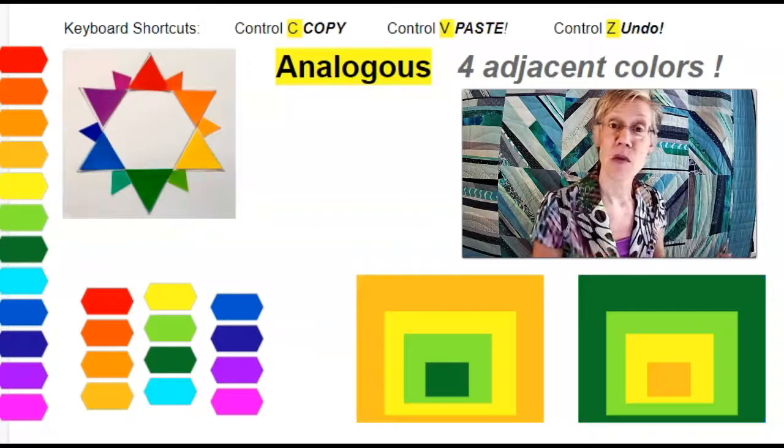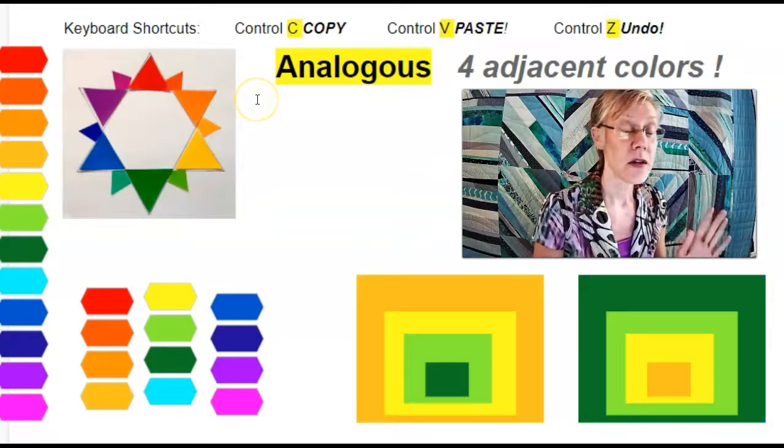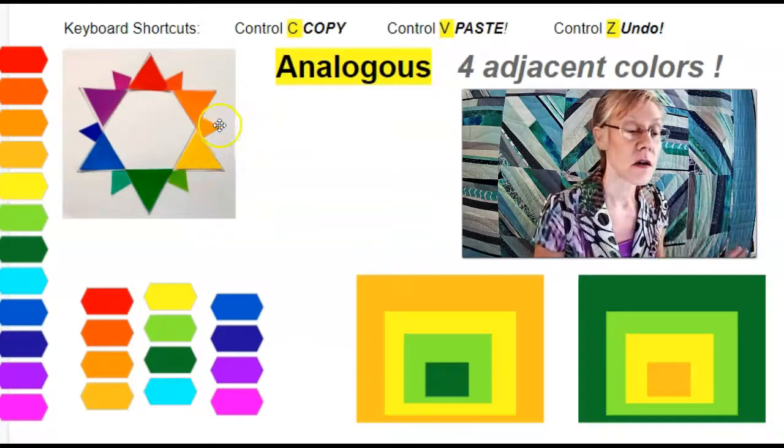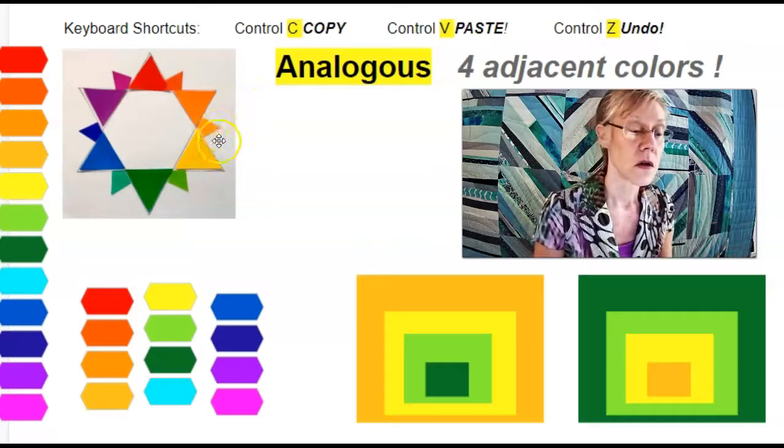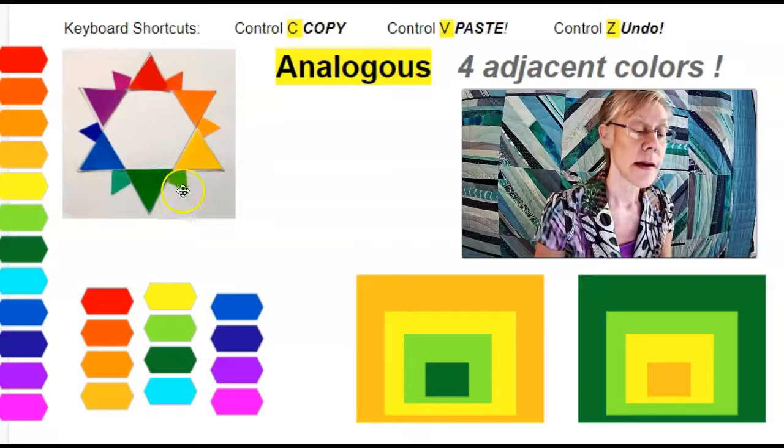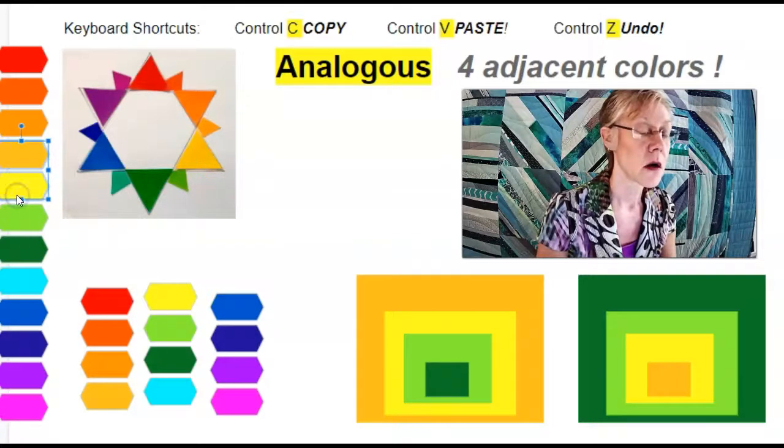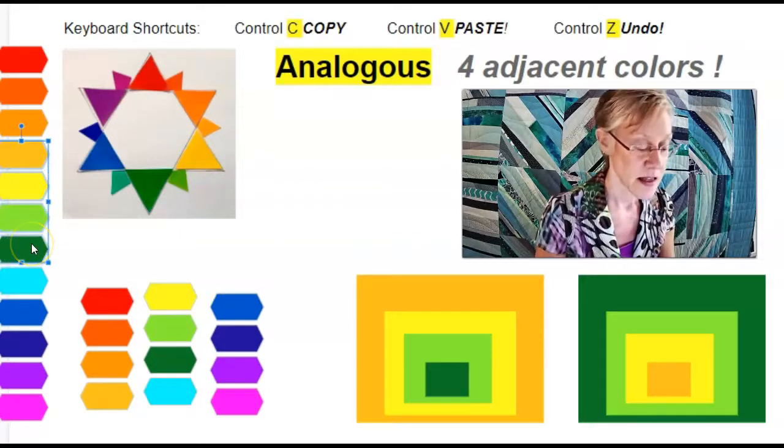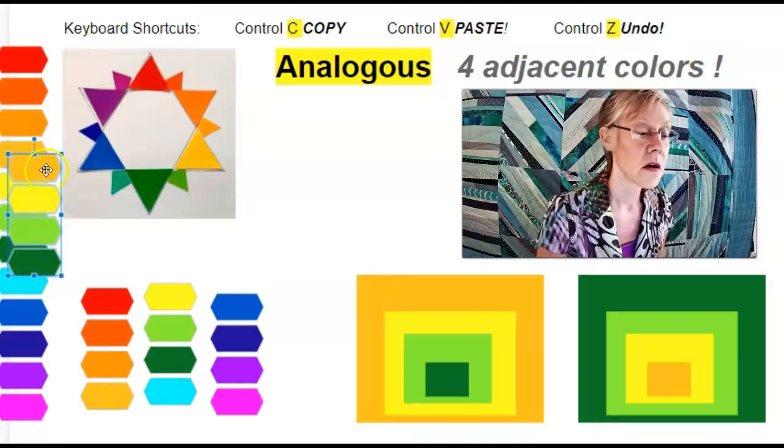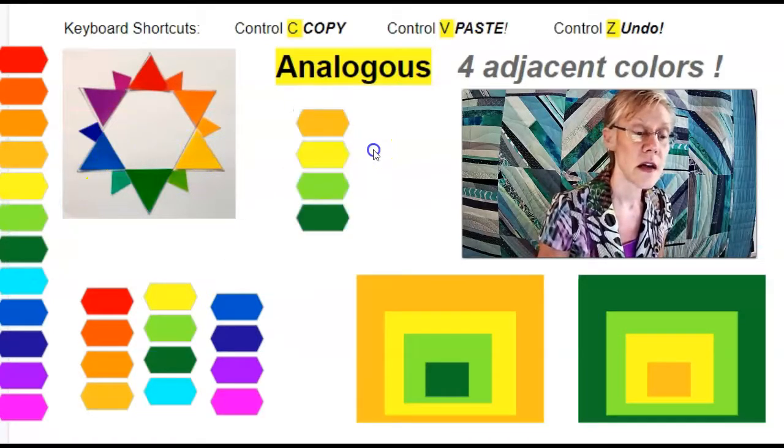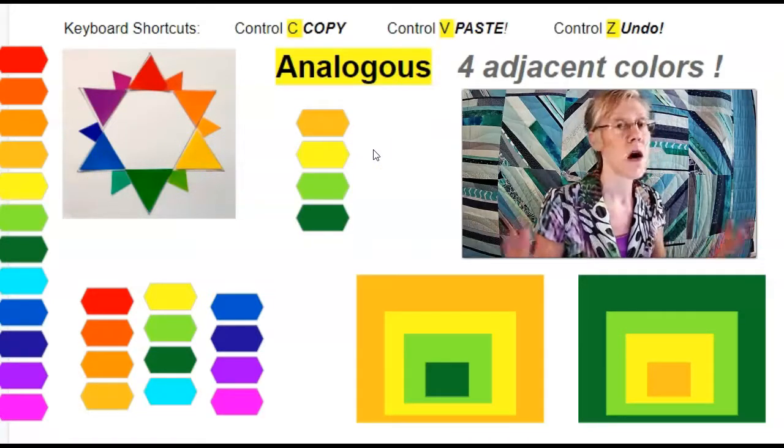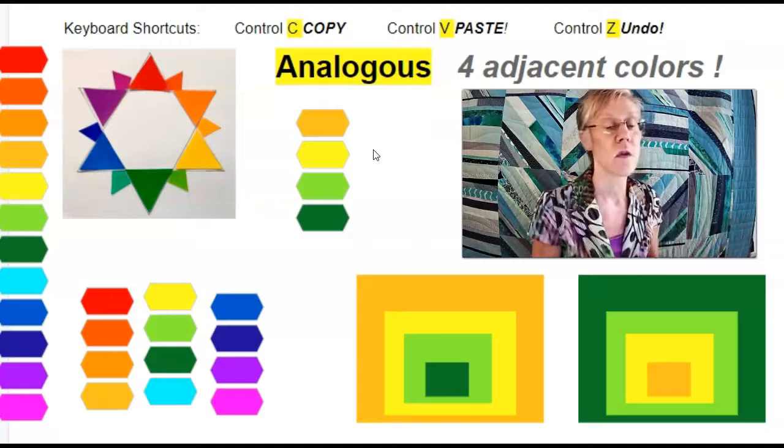Last example. You could start counting with any color. So, gold, yellow, lime, and green. That would be a tertiary, a primary, a tertiary, and a secondary color. Designers love analogous colors because they harmonize beautifully. They look wonderful together.